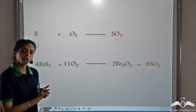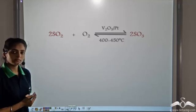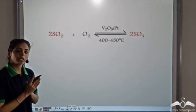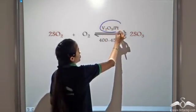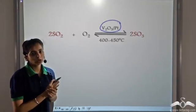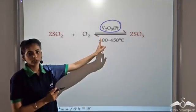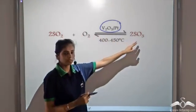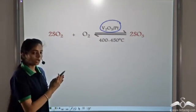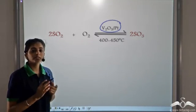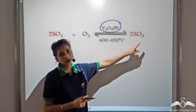We can use either of the two methods for preparation of Sulfur Dioxide. Next, this Sulfur Dioxide is made to react with Oxygen in the presence of a catalyst — Platinum or Vanadium Pentoxide. The temperature required is around 400 to 450 degrees Celsius. This is a reversible reaction, as the reactants can give the product and the product can also give back the reactants. Using the catalytic converter, Sulfur Dioxide is converted into Sulfur Trioxide.